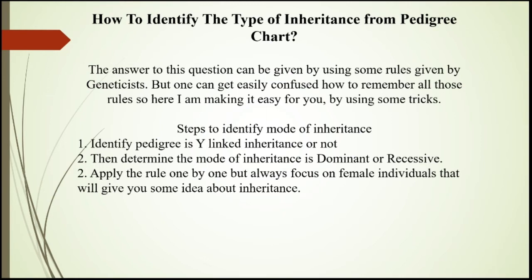Some steps are as follows. First, while identifying inheritance, when you see the chart, check whether it is Y-linked inheritance or not — if all affected individuals are only male, then it may be Y-linked. Second, determine the mode of inheritance: dominant or recessive. If dominant, apply the rules one by one for autosomal dominant and sex-linked dominant. If recessive, apply the rules for X-linked recessive and autosomal recessive — this narrows your search.